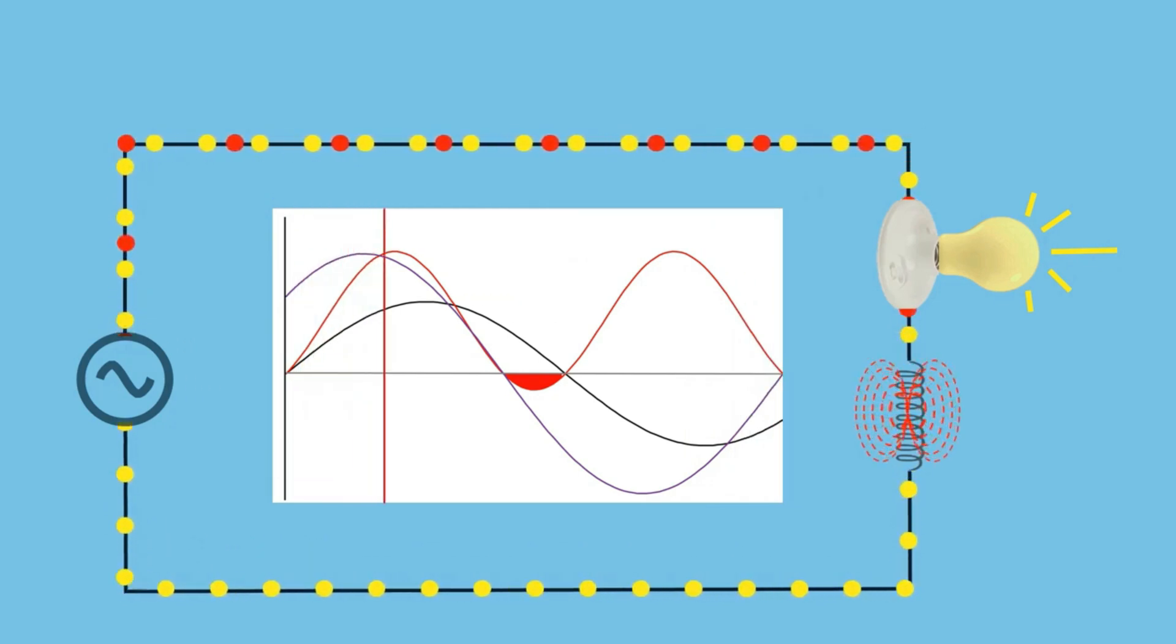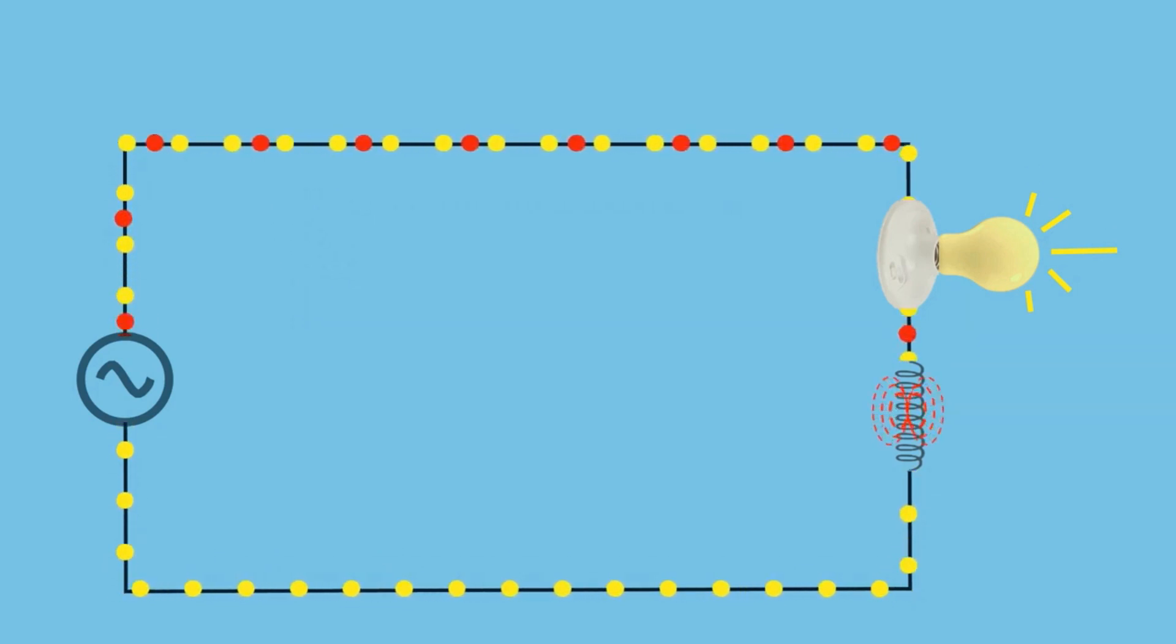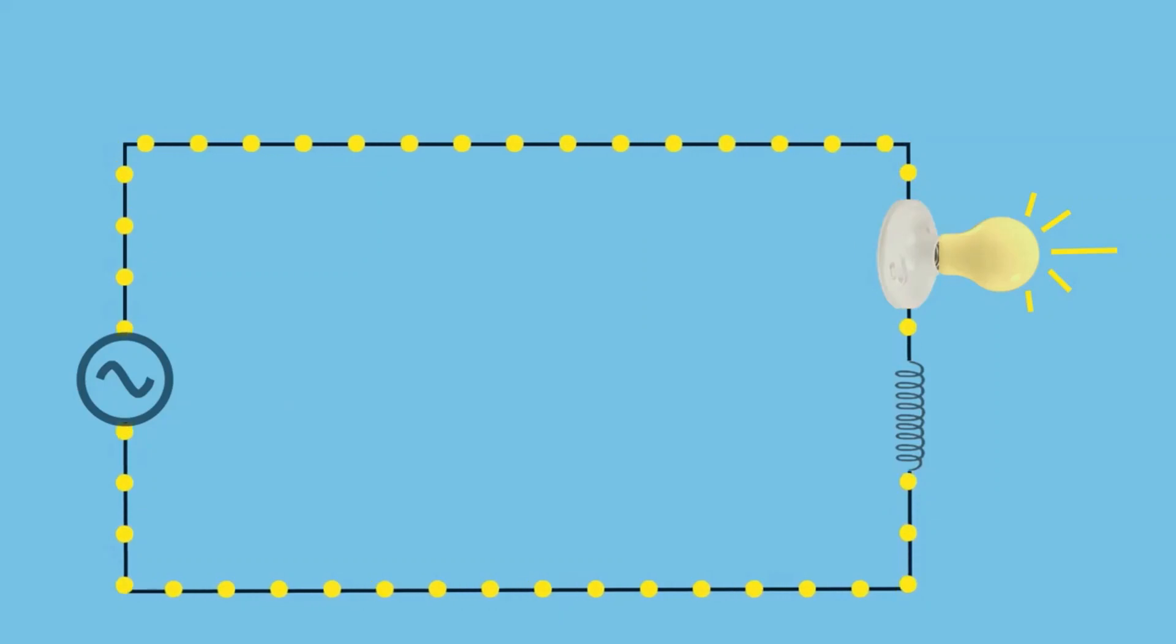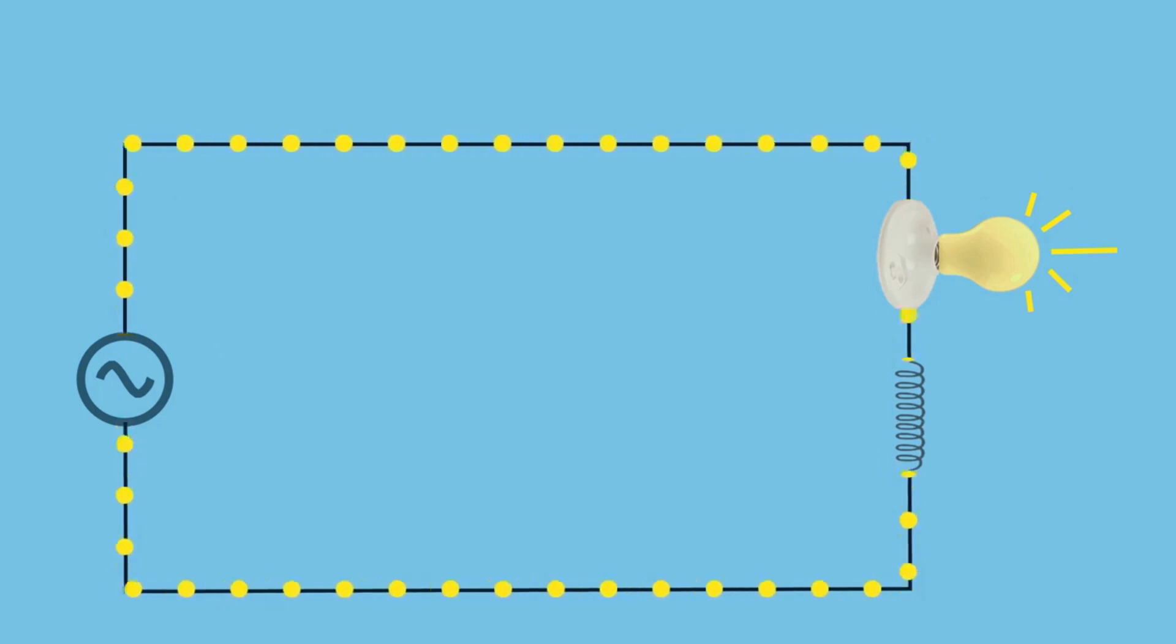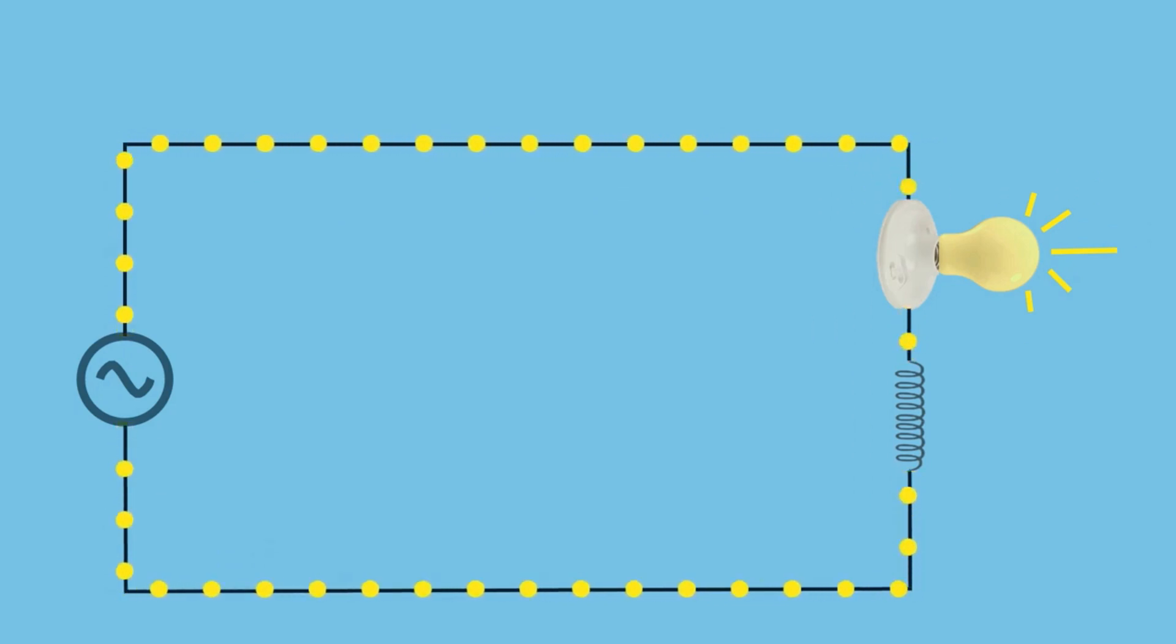The yellow dots in the animation symbolize active power, the power that flows from the source to the load to perform useful work. The red dots, on the other hand, represent reactive power, which oscillates between the inductor and the power source. While this visualization is not perfectly accurate, it highlights the relationship between active and reactive power and how energy dynamics work in circuits with inductive loads. Please keep this in mind as you watch the animation.